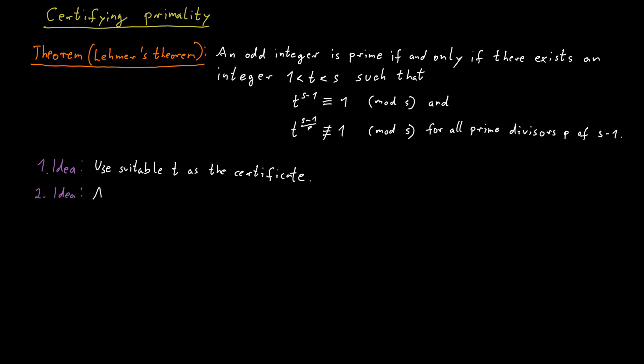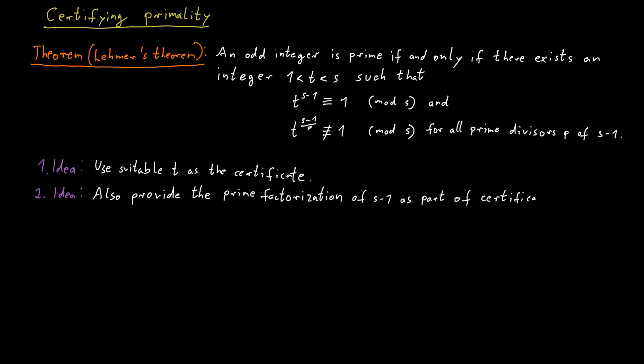The trick here is easy: we just include the prime divisors of s minus 1 in our certificate. Specifically, we provide the prime factorization of the number s minus 1 to the verifier as part of the certificate. So the certificate would include the number t and the prime factorization of the number s minus 1, and with this information it seems like the verifier should be able to check everything.